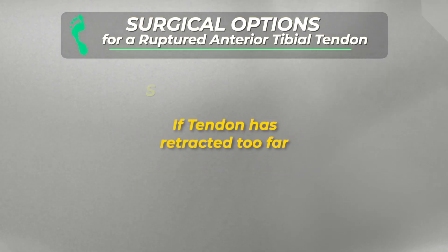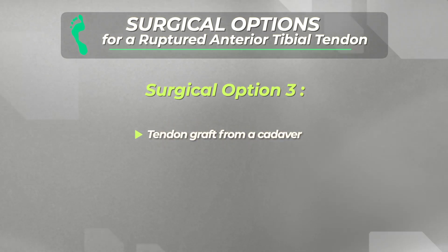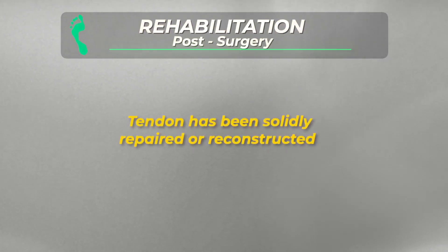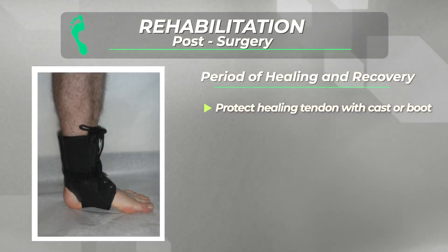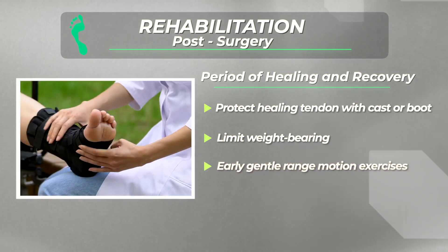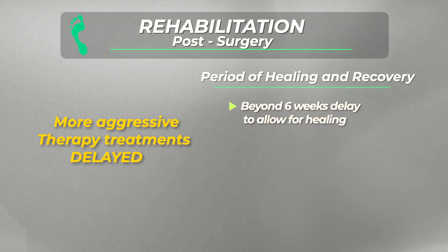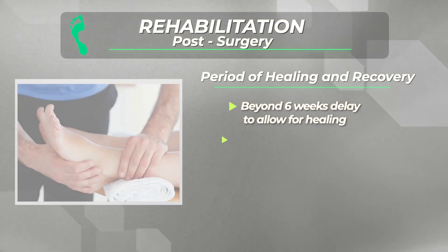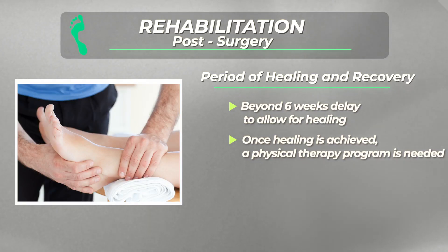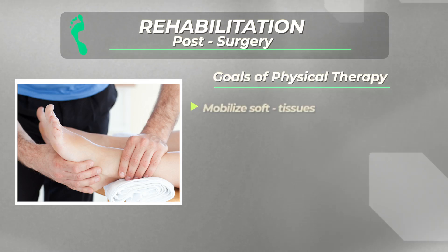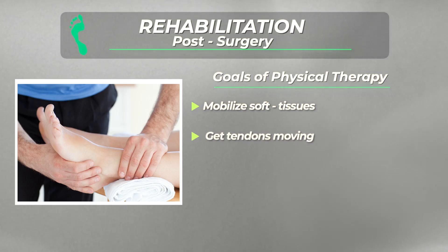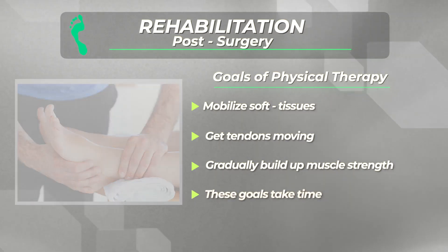Another option, if the ruptured tendon has retracted a considerable amount up the leg, is to use a tendon graft from a cadaver. Once surgery has been performed and the tendon has been solidly repaired or reconstructed, a period of healing is needed. During this time, the ankle and foot is protected in a cast or boot and weight bearing is usually limited. Gentle range of motion exercises may be started once the incision has healed after a few weeks. However, more aggressive therapy is often delayed beyond six weeks to ensure adequate healing. Once the tendon reconstruction has healed, a concerted physical therapy program is necessary to mobilize the soft tissues, get the tendons moving again, and gradually build up the muscle strength that has been lost following the injury.